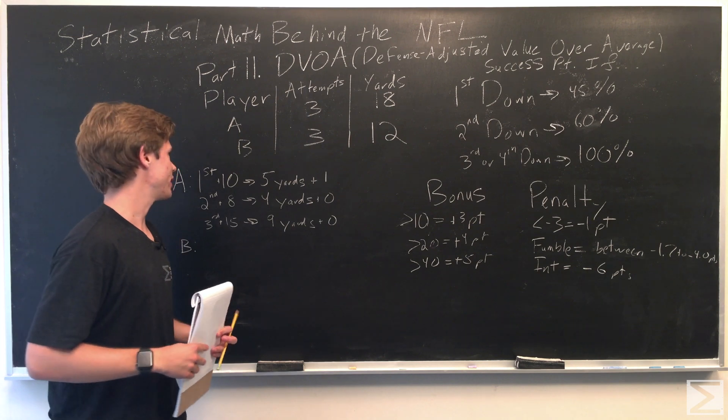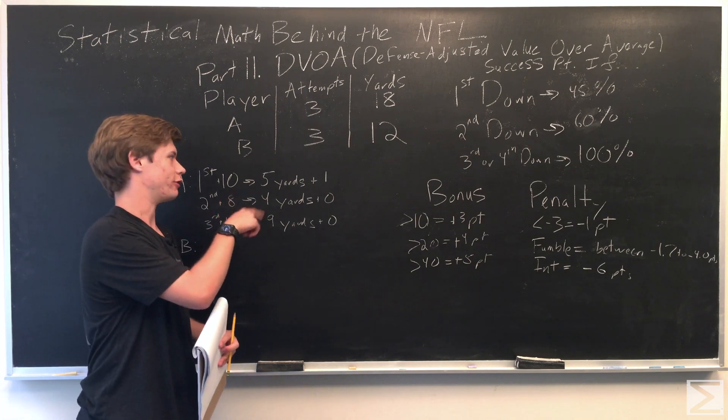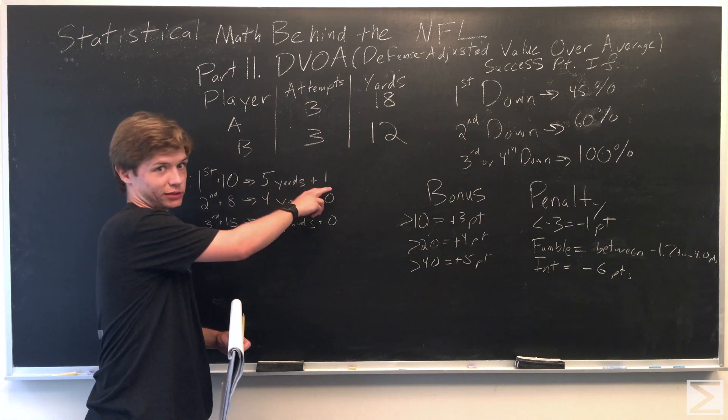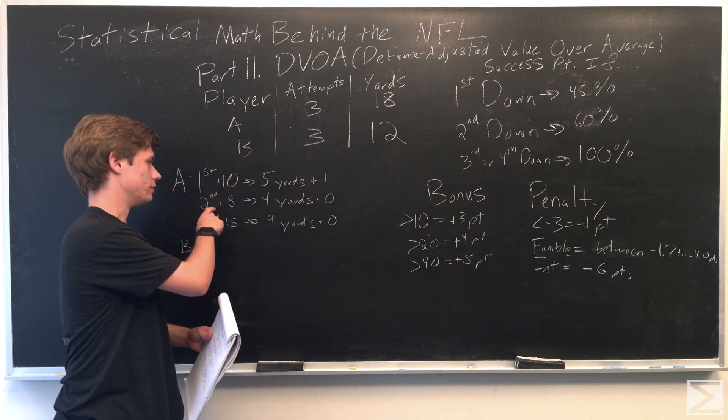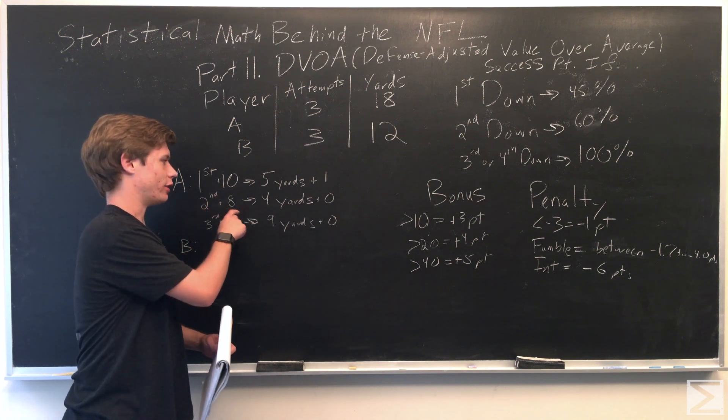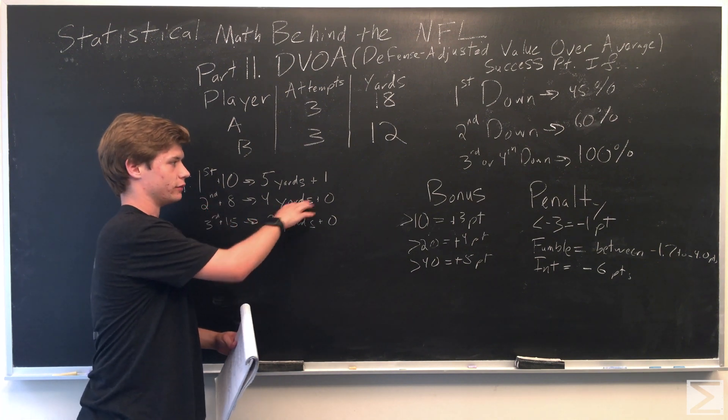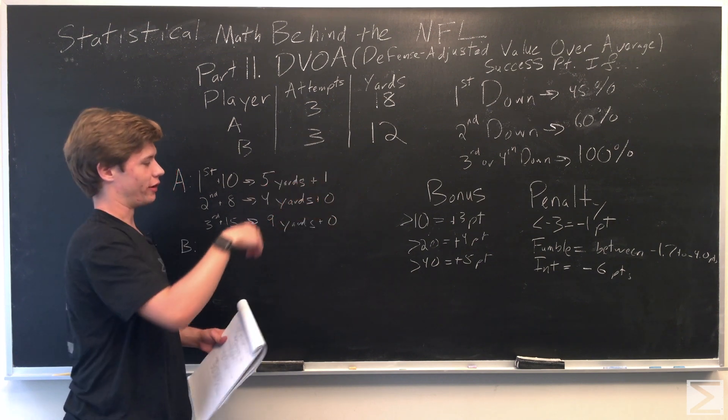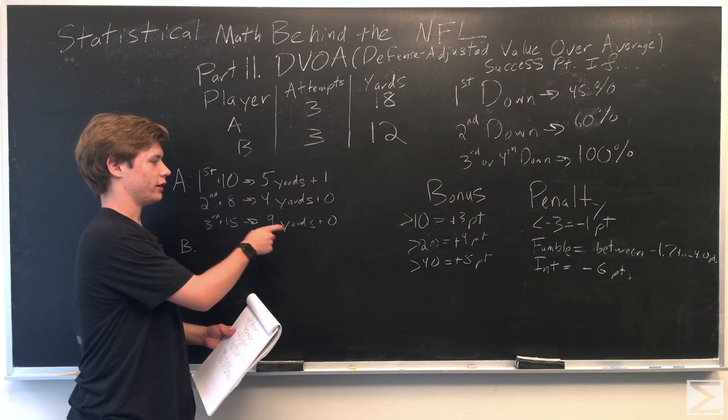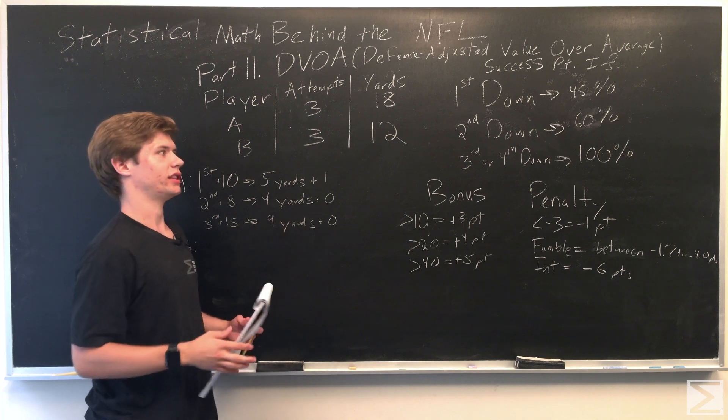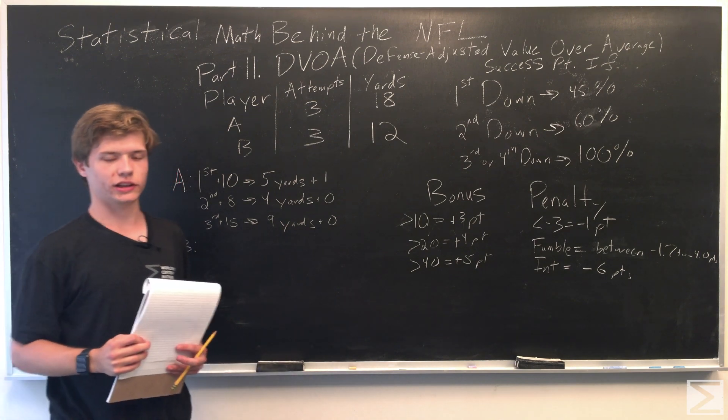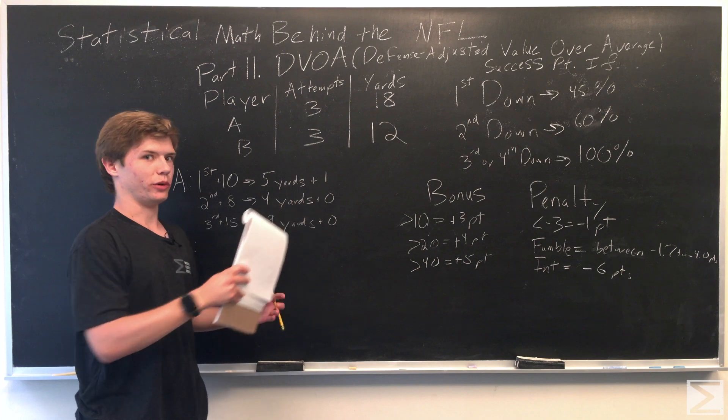As you can see, these are player A's plays we've set up. So on first and 10, he'll run for five yards. That's a success point. Second down and 8, he'll run for four yards. So that's no points because it's less than 60%. And then third and 15, nine yards, and again, no success point because you're not going to get a conversion. So he has, in total, one success point.